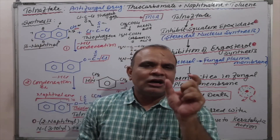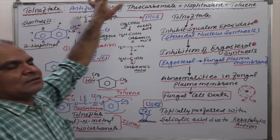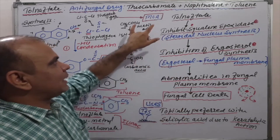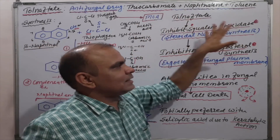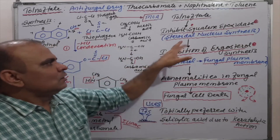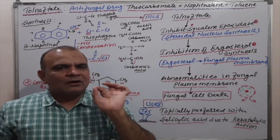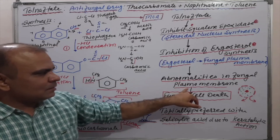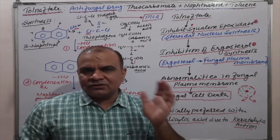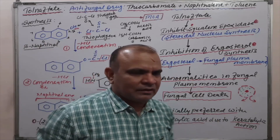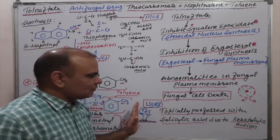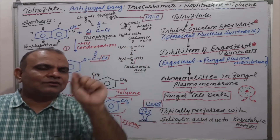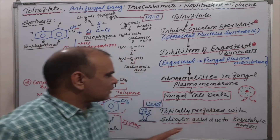Quick review of tolnaftate: Tolnaftate belongs to antifungal drugs. It is a combination of thiocarbonate, naphthalene, and toluene. It is a squalene epoxidase inhibitor, which results in inhibition of ergosterol synthesis. Ergosterol is the main component of the fungal plasma membrane; abnormalities in the fungal plasma membrane cause death of fungal cells. There is no ergosterol present in the human plasma membrane.